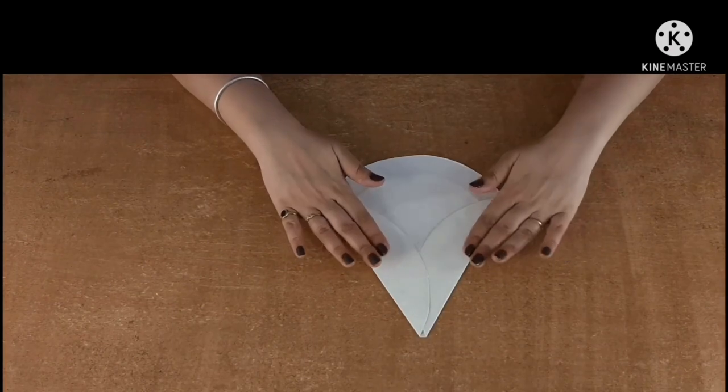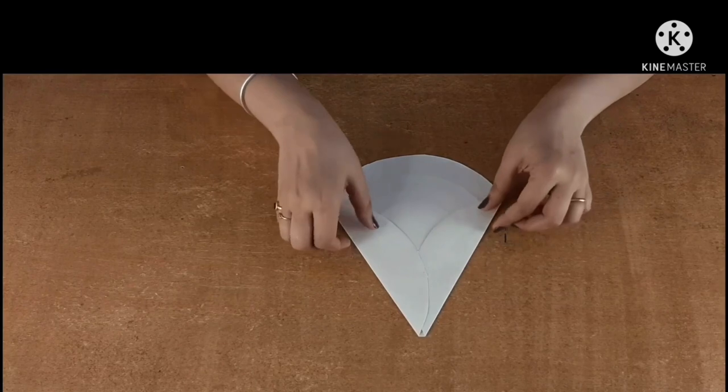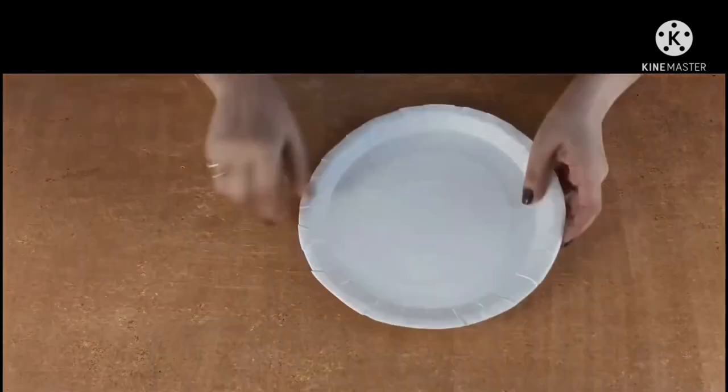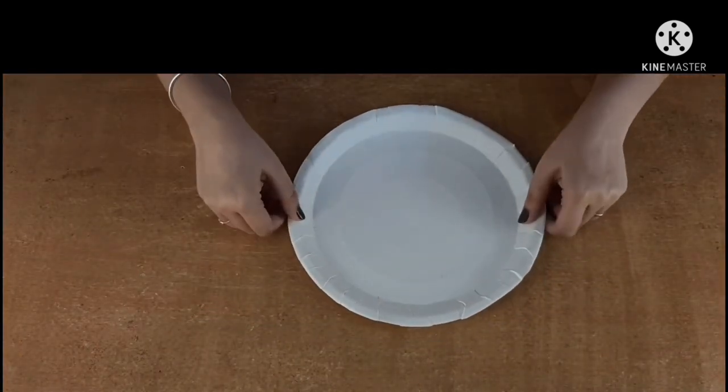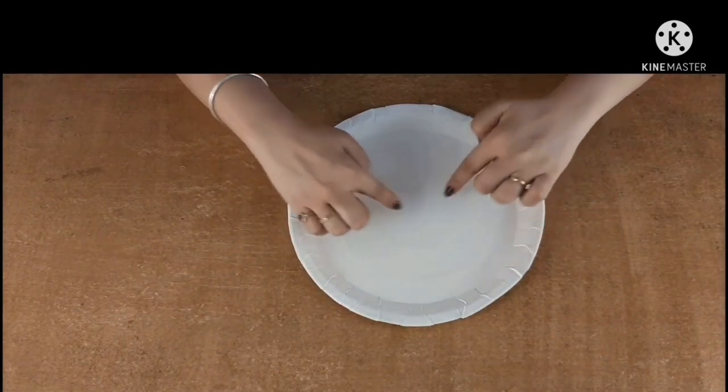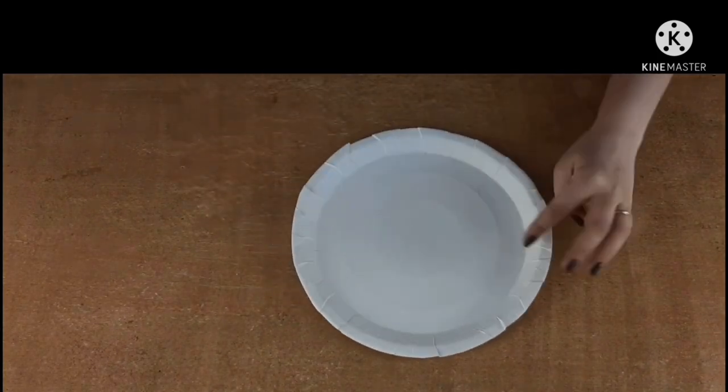So now it will look something like this, very simple. Now we have to stick this. So let's stick it. Now while this dries up, we will keep this aside and make the fox's body. So you just keep this aside and take the other paper plate. Now I will draw the body of the fox, the legs and then I will cut it. So I will show you how to cut it.